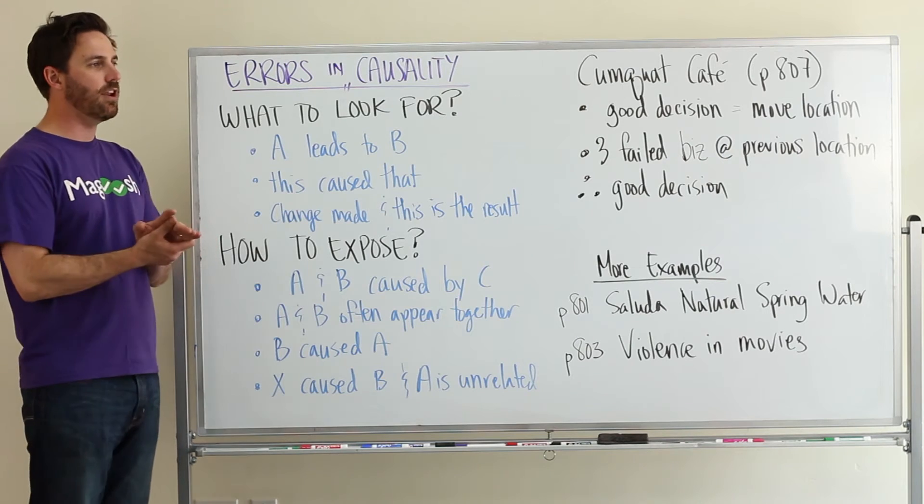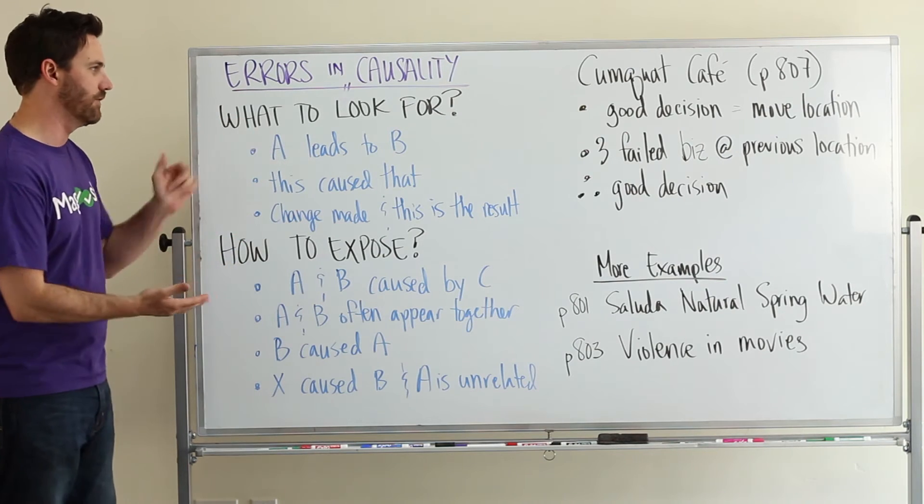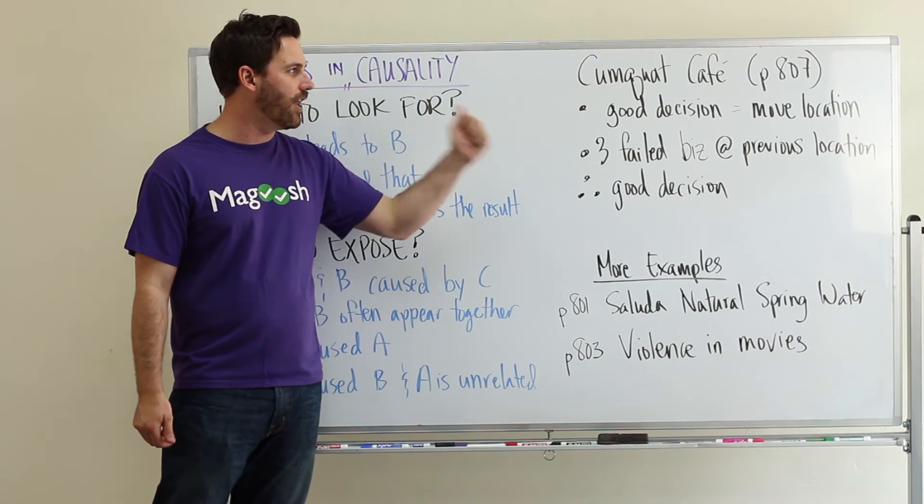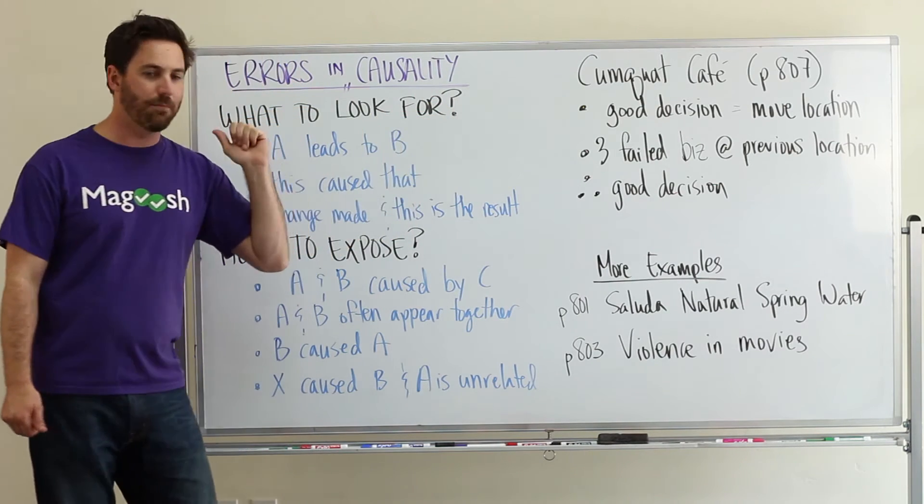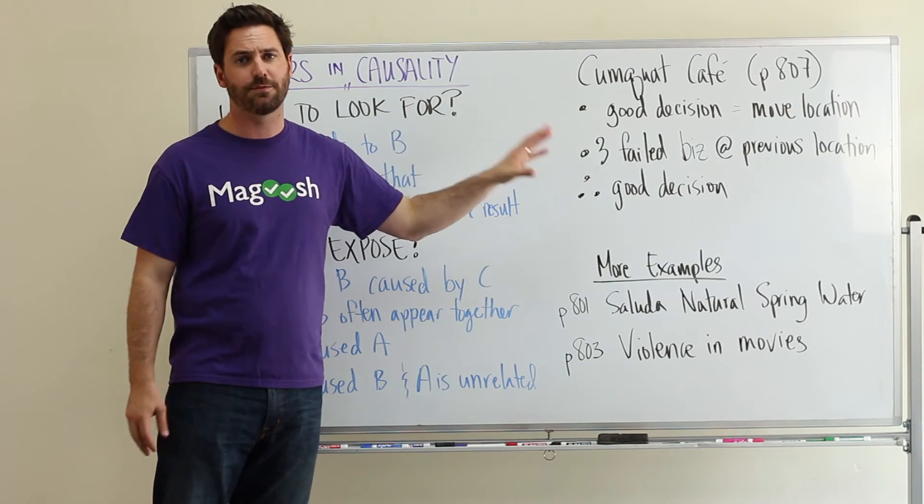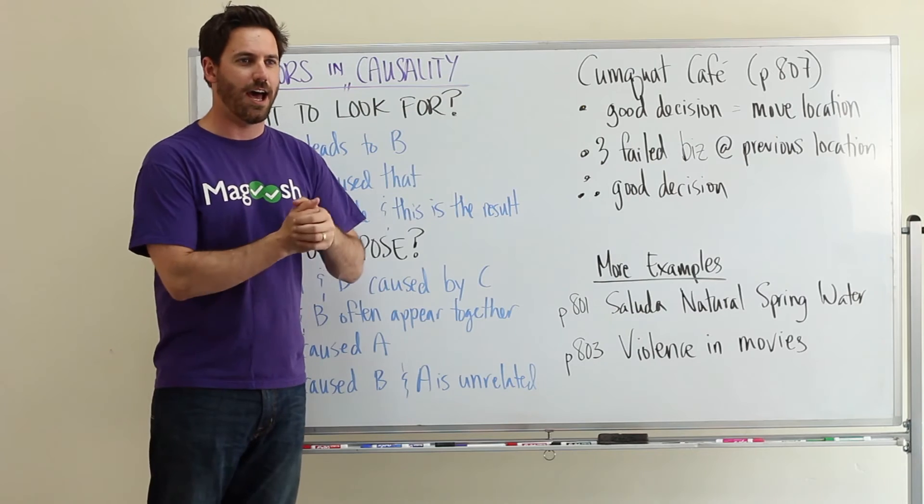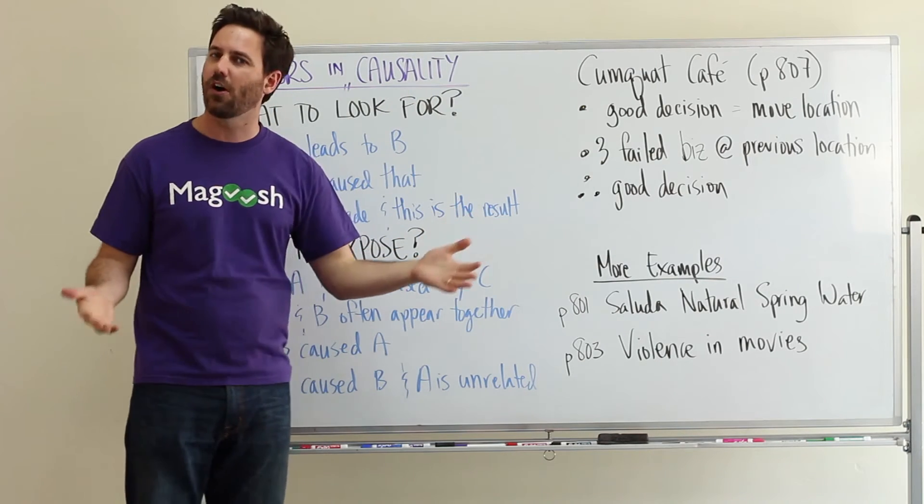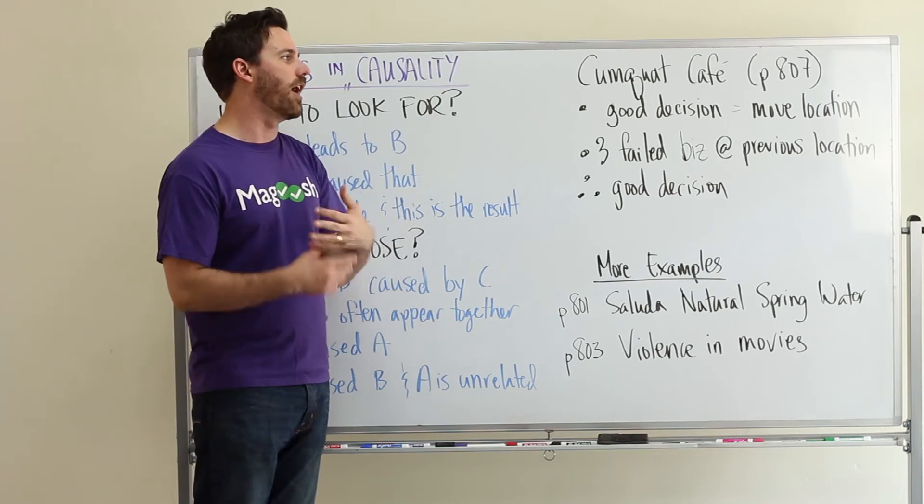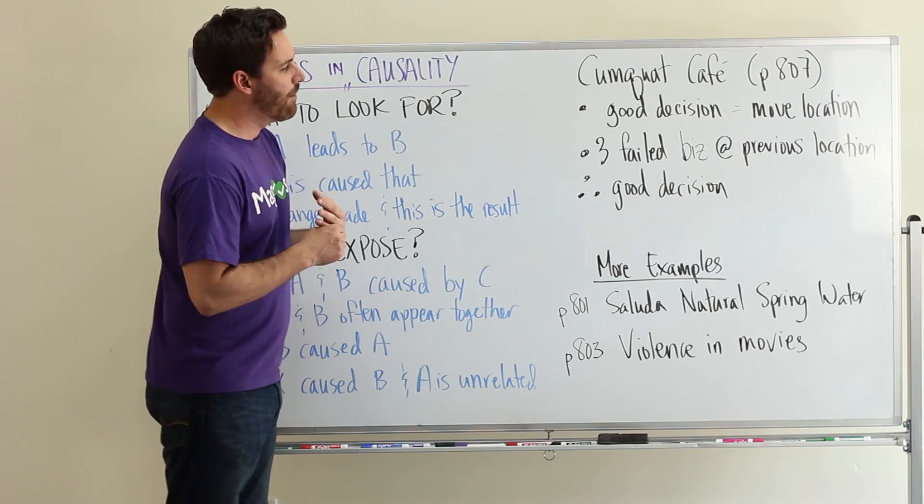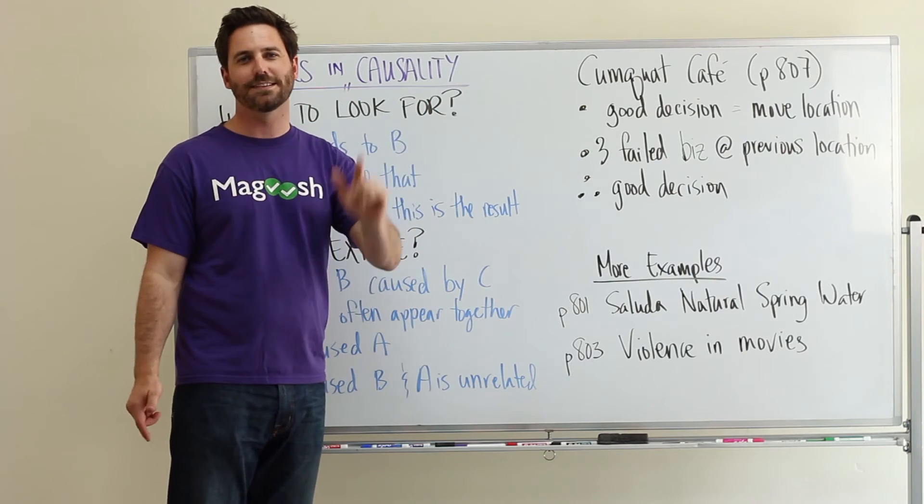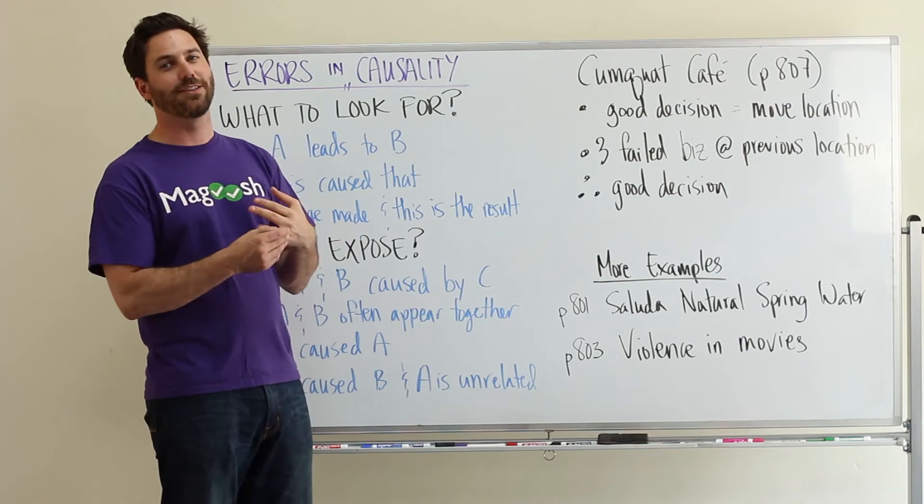So, talking about these things in your essay will be a great way to expose these flaws. There's a great example of this in one of the arguments on page 807 in the 13th edition of the official guide. You can also get this information online, MBA.com publishes all of these arguments online in a PDF. And so you can search for Kumquat Cafe to find this one. But basically what they say is this cafe made a good business decision because they moved locations, and now they're celebrating their second anniversary.